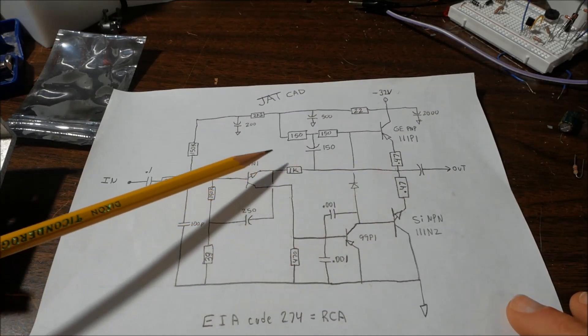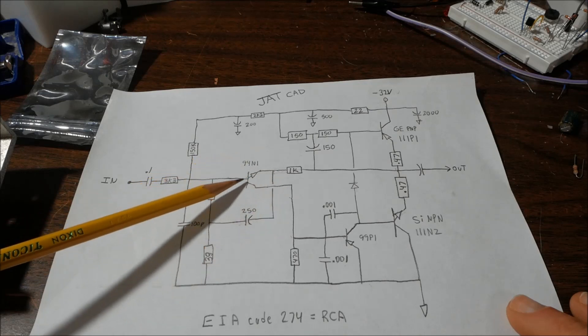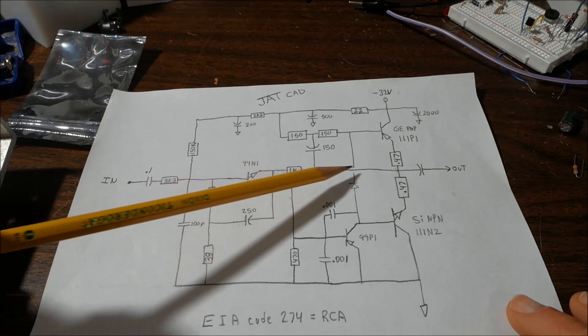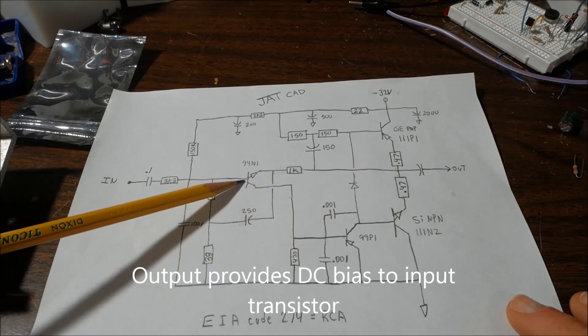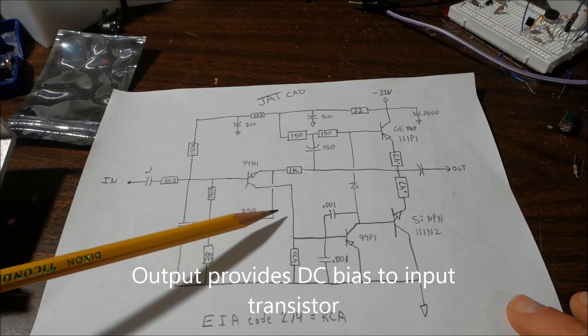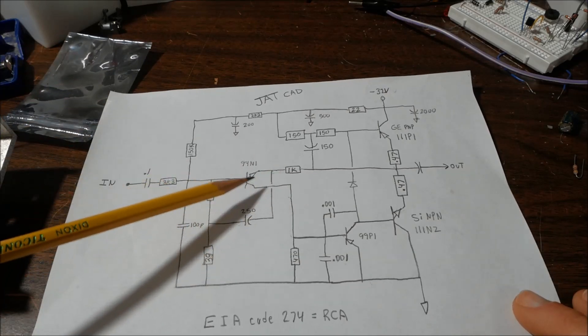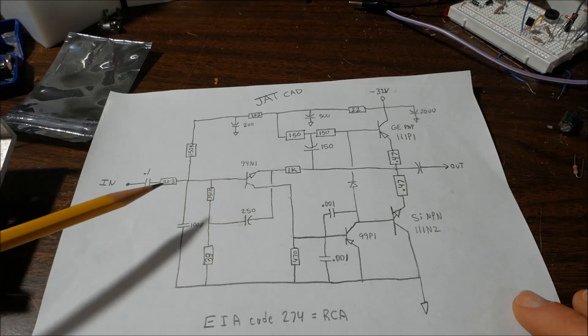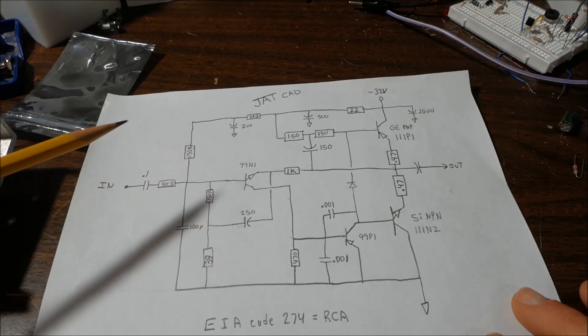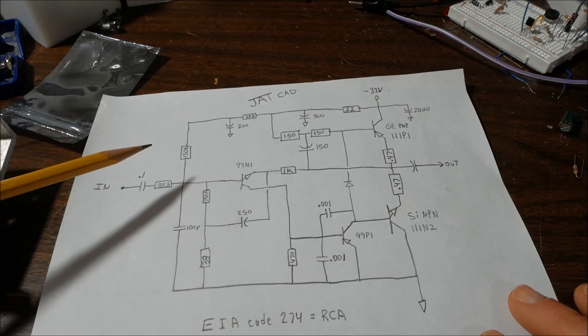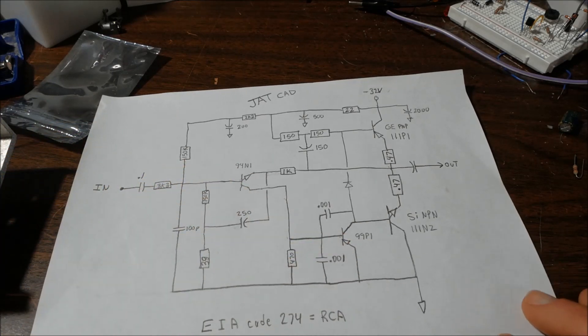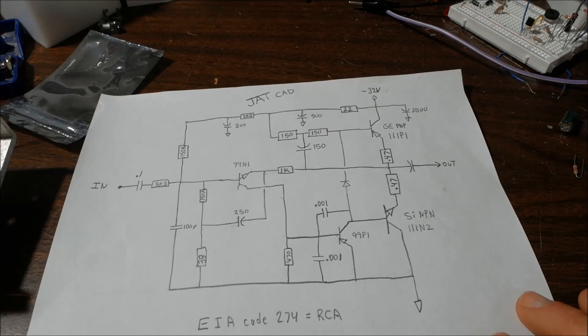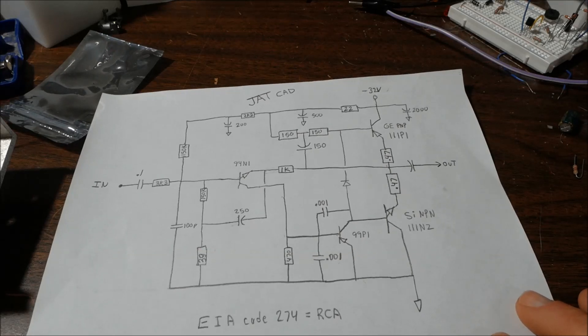Well, in this case, this stage has to work a lot harder to drive these outputs because they're not using a Darlington or any other high gain type stage. Another interesting thing is this reminds me kind of that JLH amplifier where they're bringing the output here to bias this input transistor and also bring some negative feedback to the circuit to help clean up the distortion. There's only four transistors in this amplifier, so it's pretty simple.